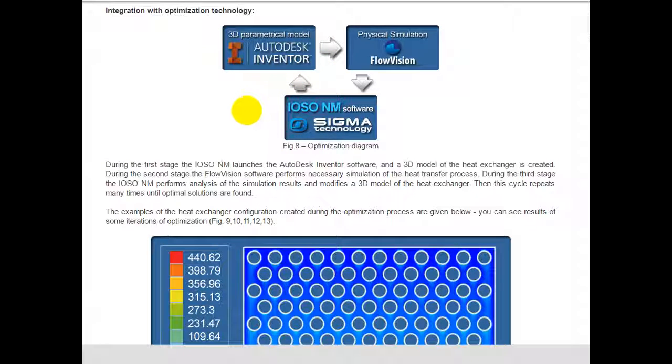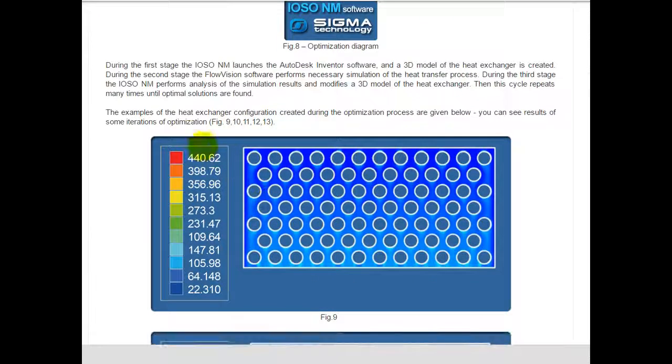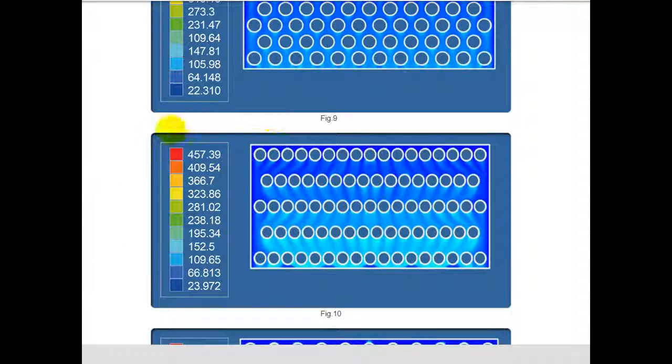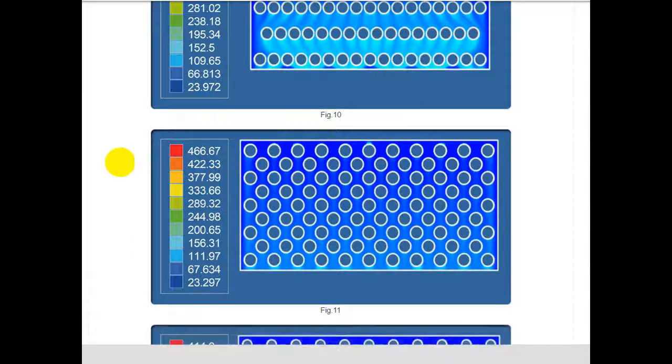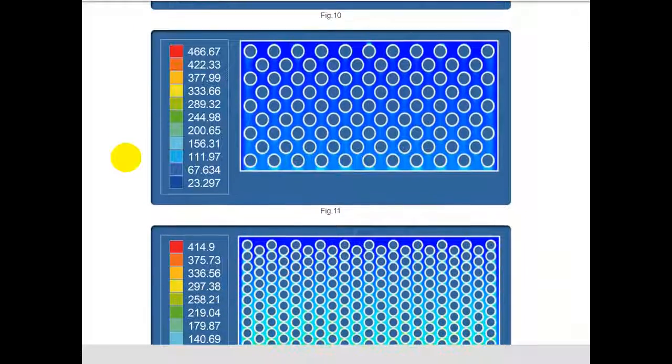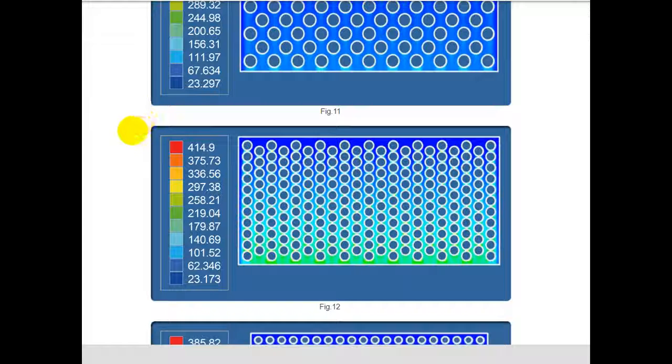Then this cycle repeats many times until optimal solutions are found. Examples of heat exchanger configurations created during the optimization process are given below. You can see how the optimization software IOSO tries to find the optimal solutions.